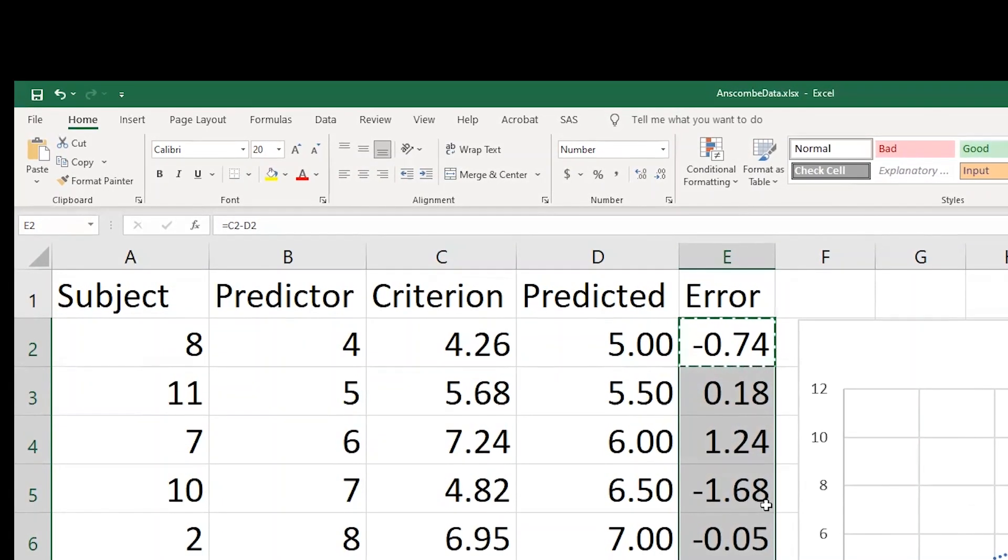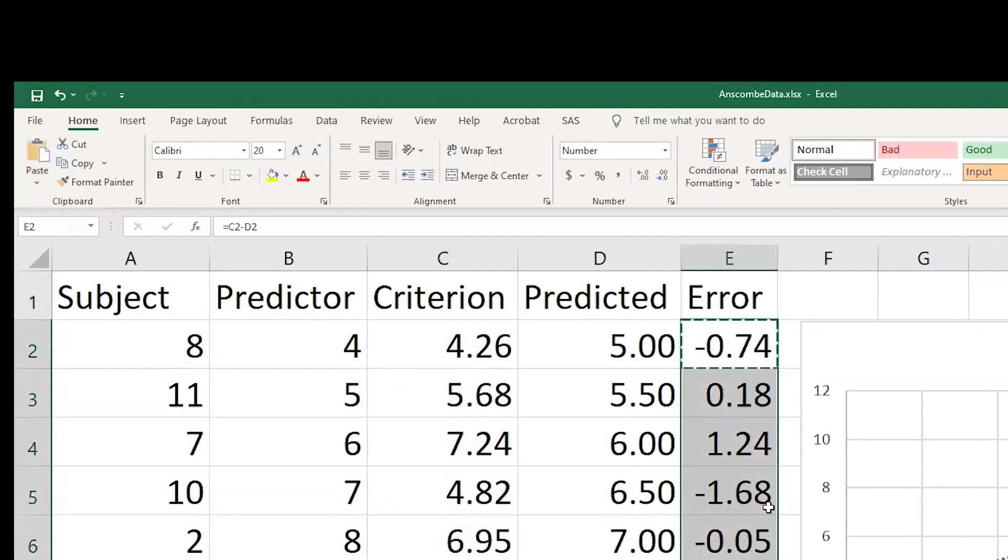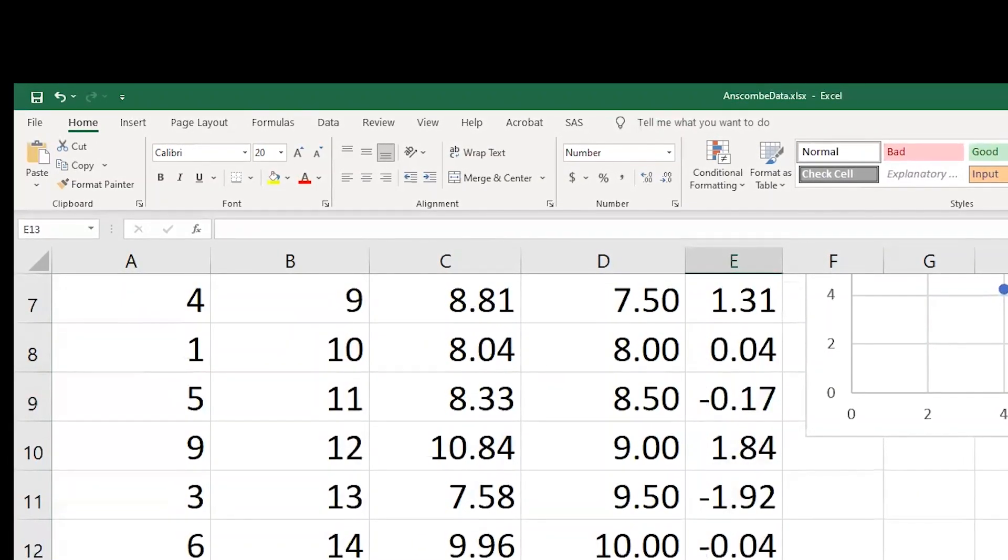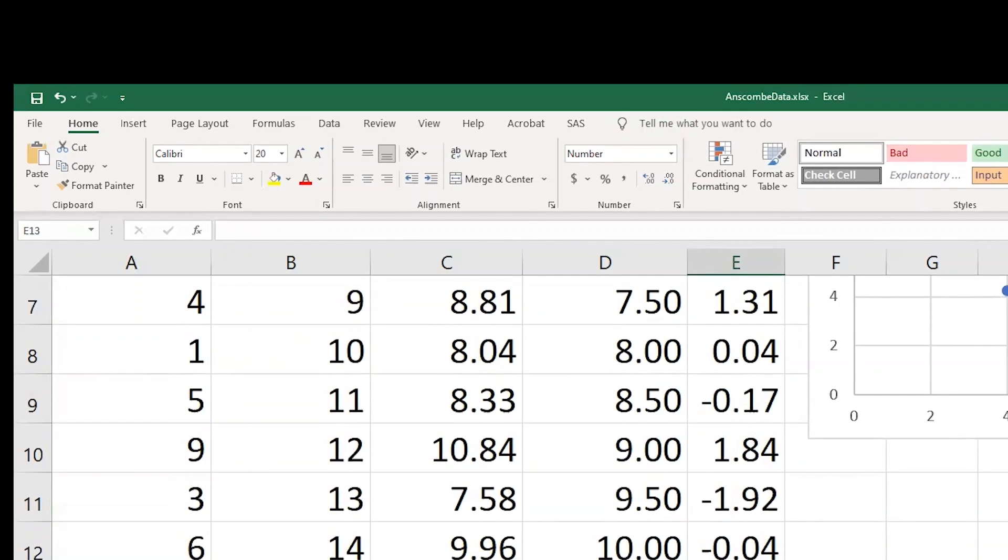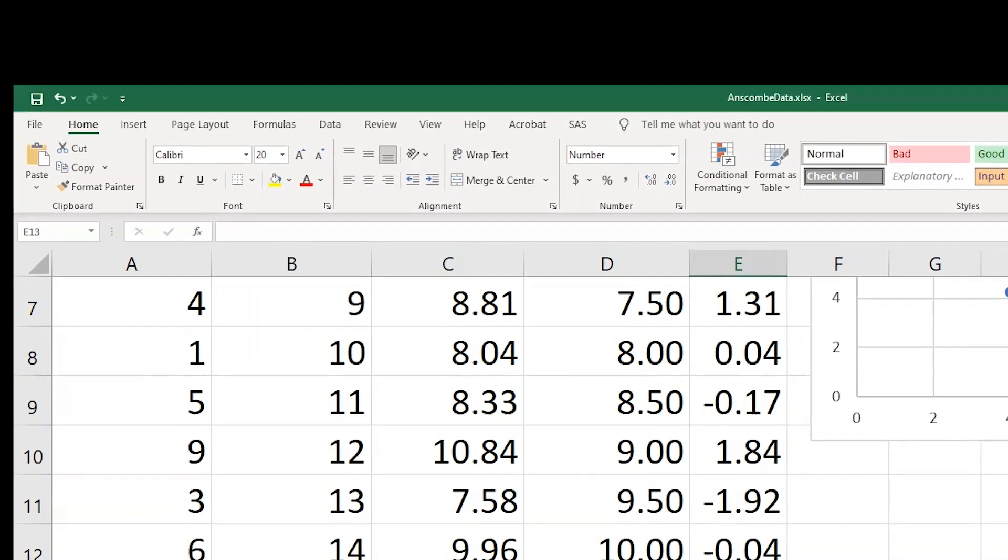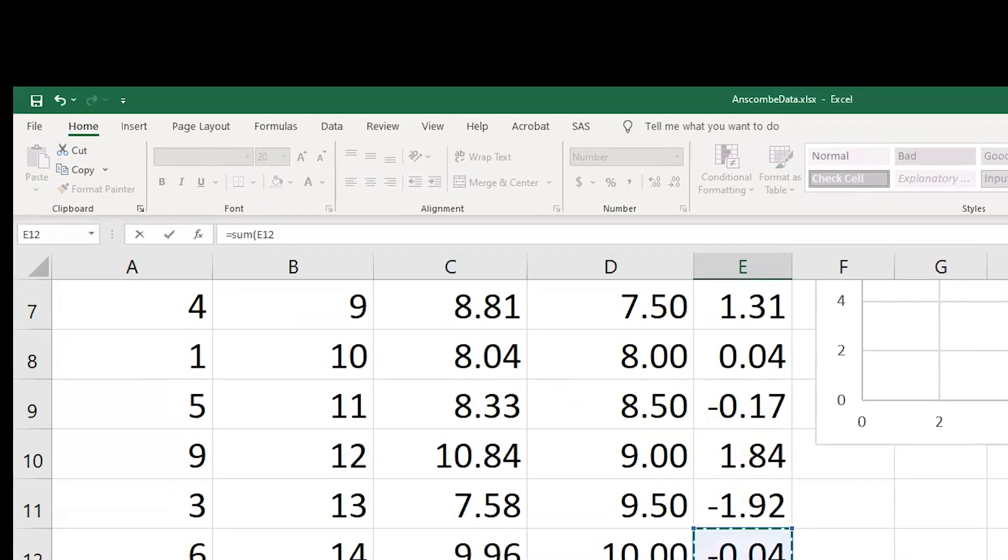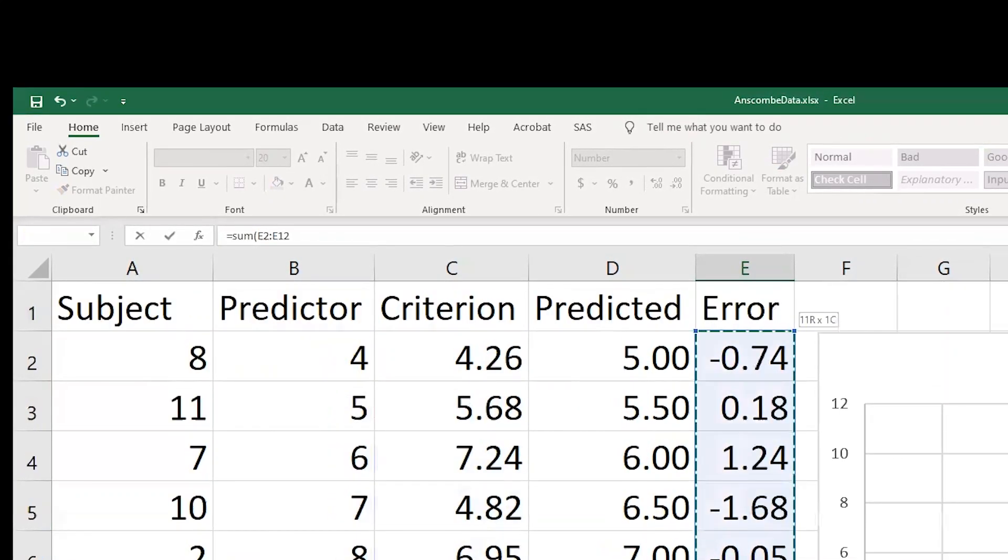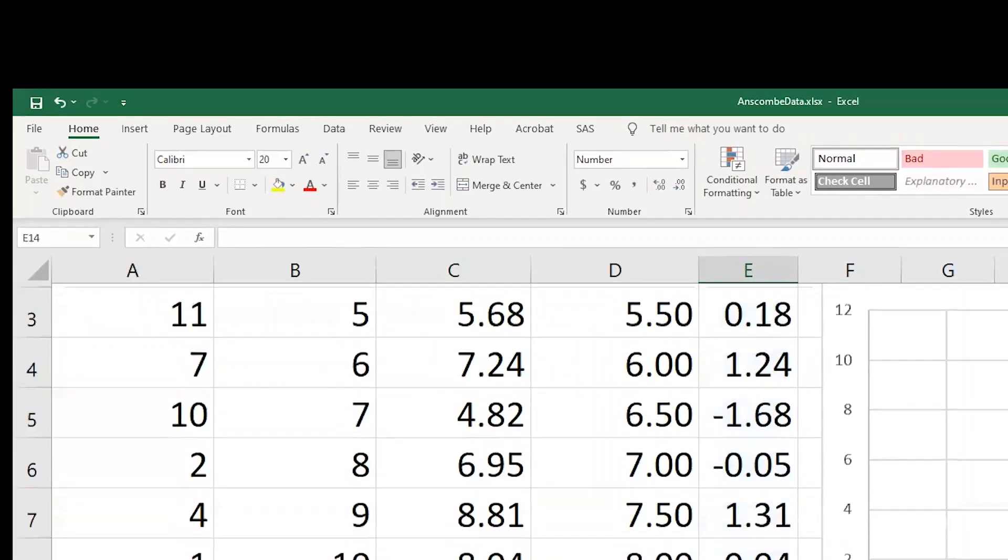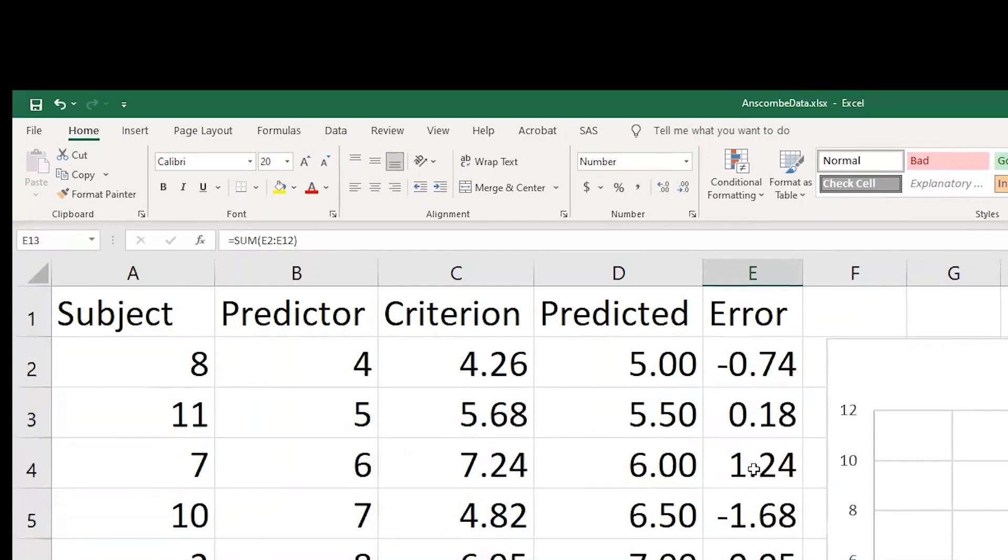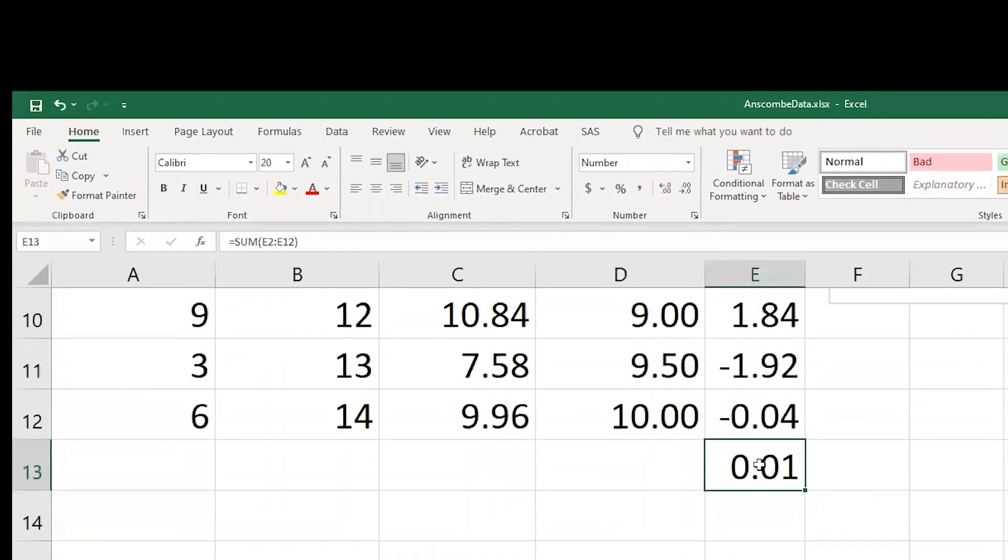Here's an interesting thing about regression lines. For least squares regression, the sum of my errors of prediction is going to be 0. To kind of see that for this data, I can type equals sum and then select this range, holding down the shift key and moving the cursor, and then hit return. And I'll see that, well, within rounding error, I've got 0 here.